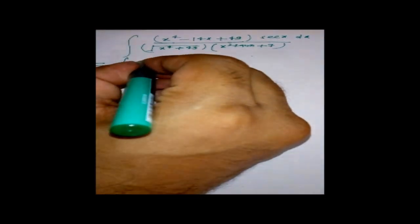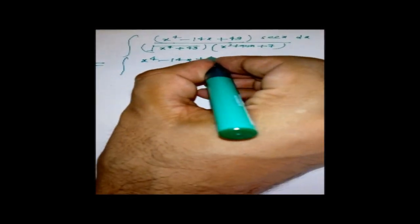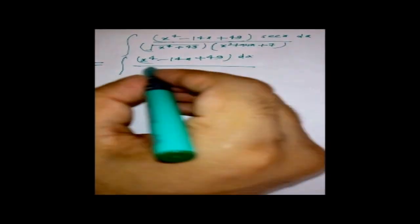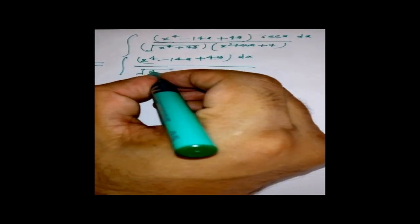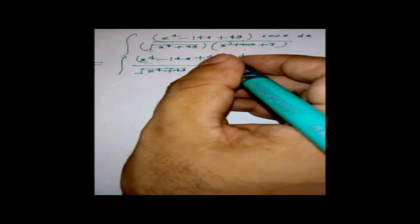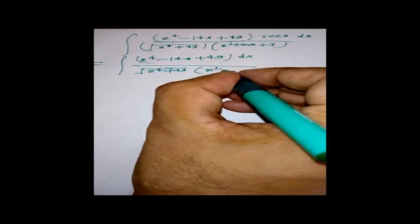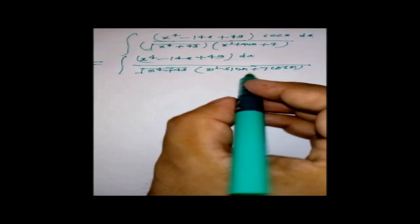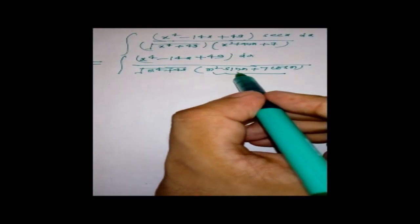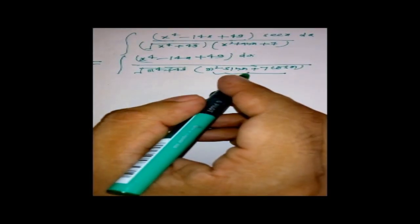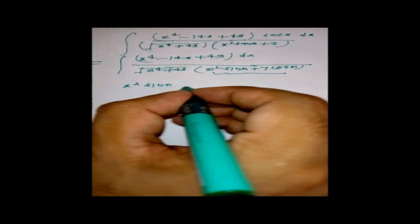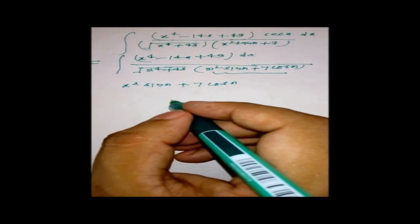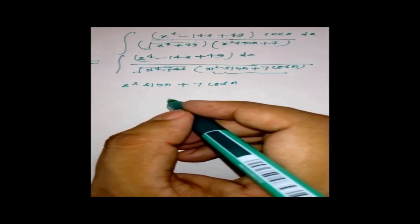The integrand contains x⁴ minus 14x plus 49 in the numerator and cos x times root(x⁴ + 49) in the denominator. After multiplying by cos x, the numerator has x² sin x plus 7 cos x. We focus on this term x² sin x + 7 cos x.